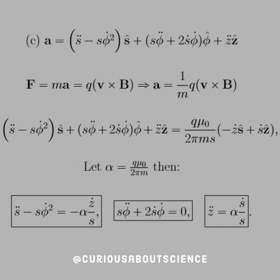What we want to do though is, you notice how we have three components? We need to set each component equal. For the s hat component, we have s double dot minus s phi dot squared equals negative alpha z dot over s. Then we have s phi double dot plus 2 s dot phi dot equals zero. And z double dot equals alpha s dot over s.